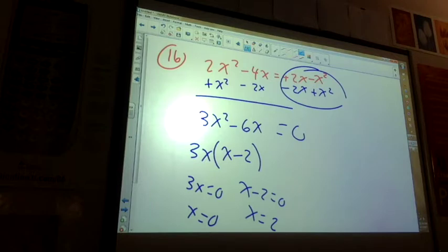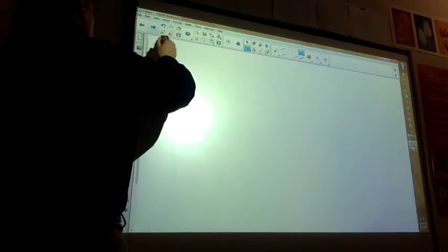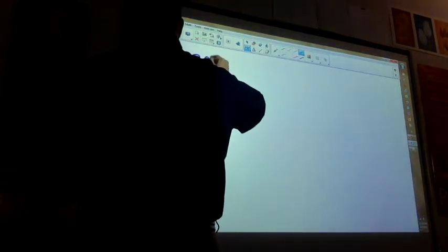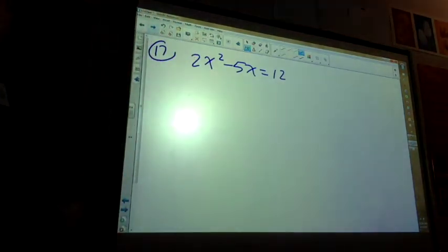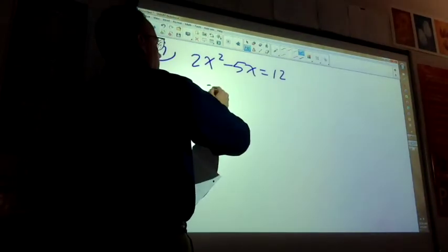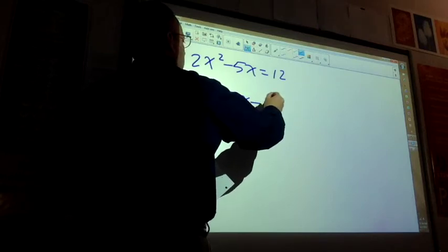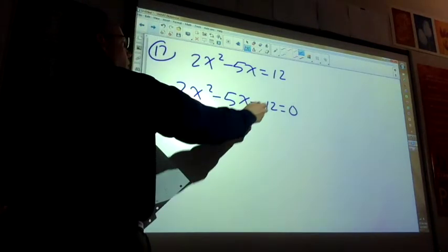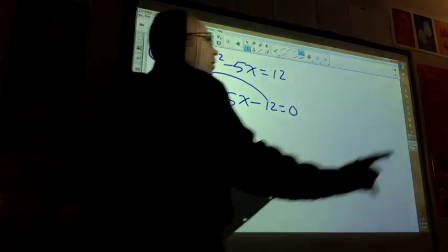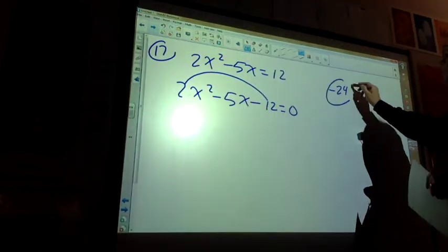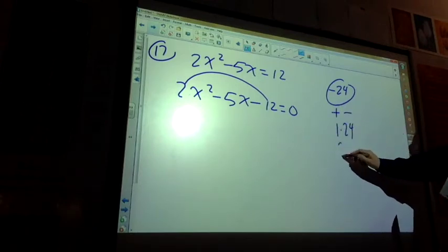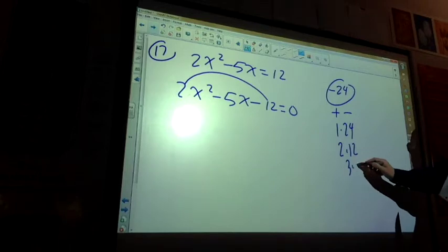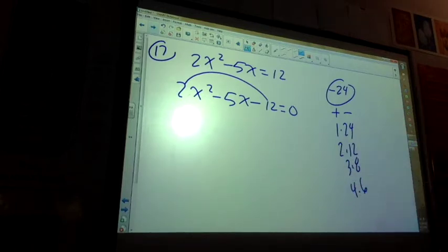17, you wanted to see? All right, number 17. 2x squared minus 5x equals 12. What should I do first? Yeah, bring the 12 over by subtracting it. So notice it has an opposite sign now. Okay? What's my magic number? Almost. Negative 24. In order to get to a negative, what do you know about the signs? Positive and negative, so I get 1 and 24, 2 and 12, 3 and 8, 4 and 6. Which two work to add up to negative 5? 3 and 8. Which one's negative? 8. Cool.